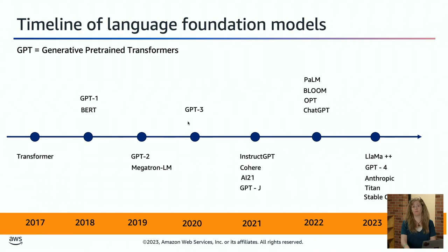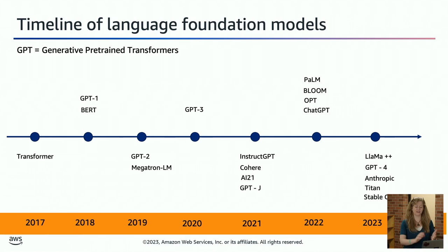Year over year we saw interesting scales of language models, where researchers proposed scaling laws to help us throw even more data and accelerators at these models to produce amazing results. Now in 2023, there are a lot of foundation models in language, whereas previously there were just a few. This timeline tells us foundation models and large language models have been around for years — there's a very active, interesting, robust, mature research community exploring these, and you too can benefit from them.